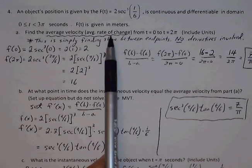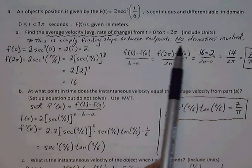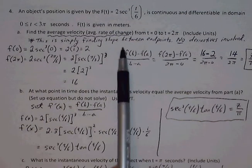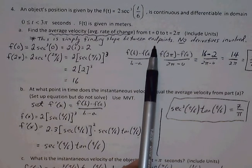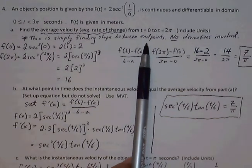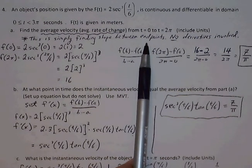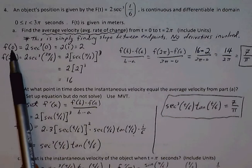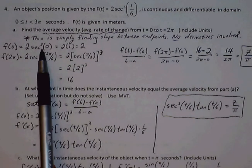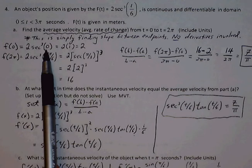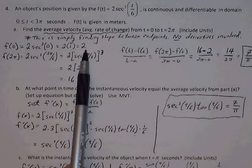We're not going to be dealing with anything regarding derivative. So if we want to find the slope between endpoints, then we just need to find the y values at each corresponding x value. So we need to plug 0 into the original function. So secant of 0 is simply going to be 1, so 2 times 1 is 2.